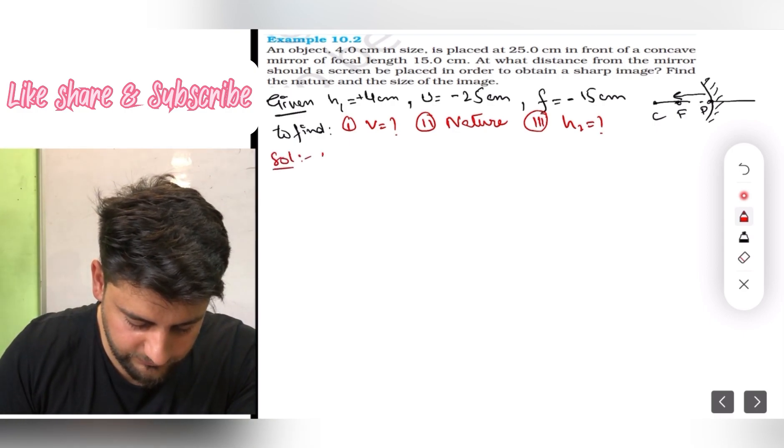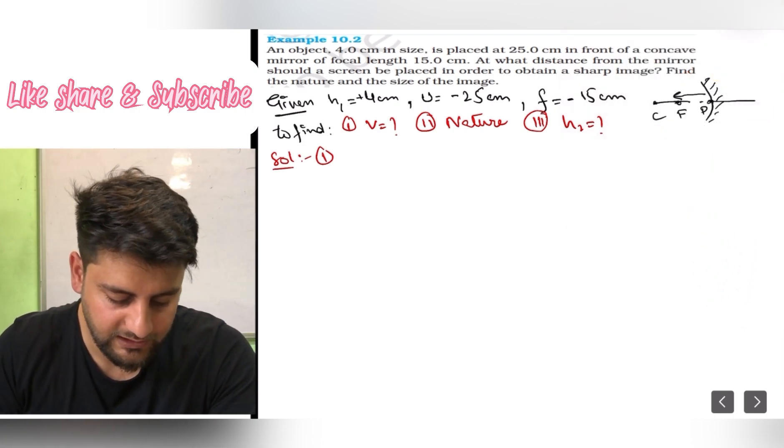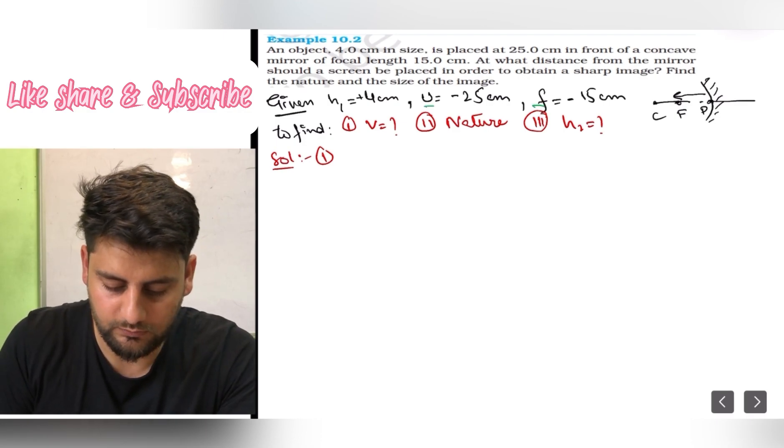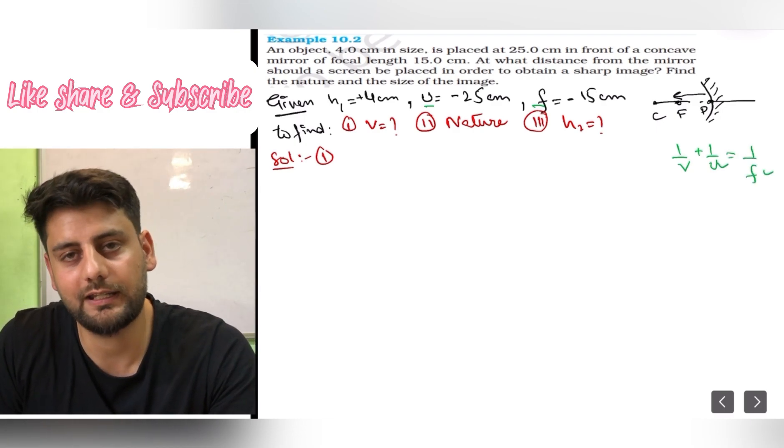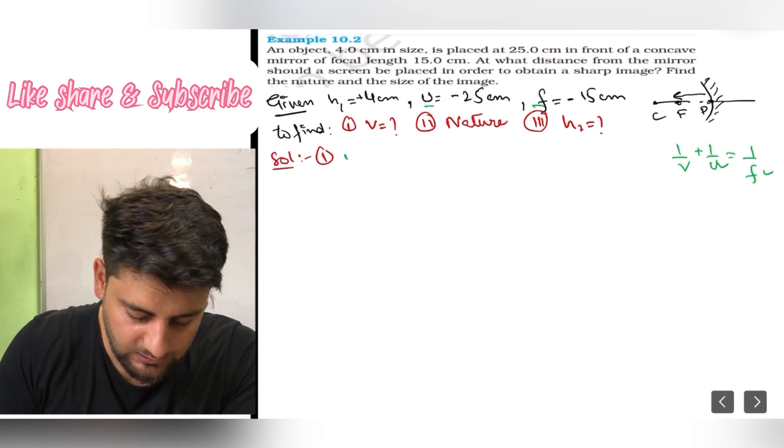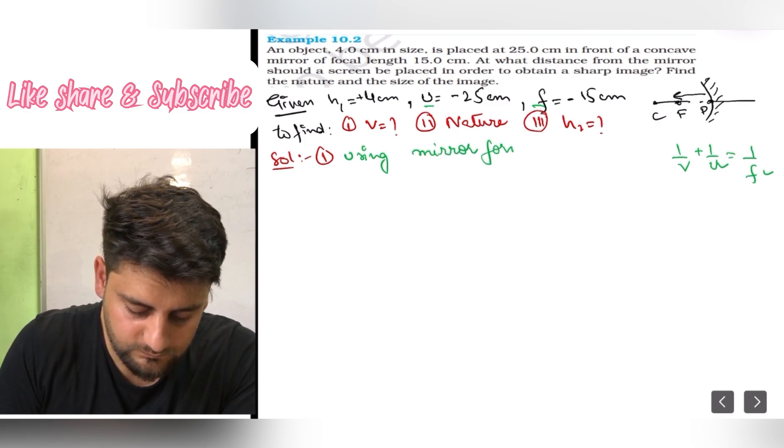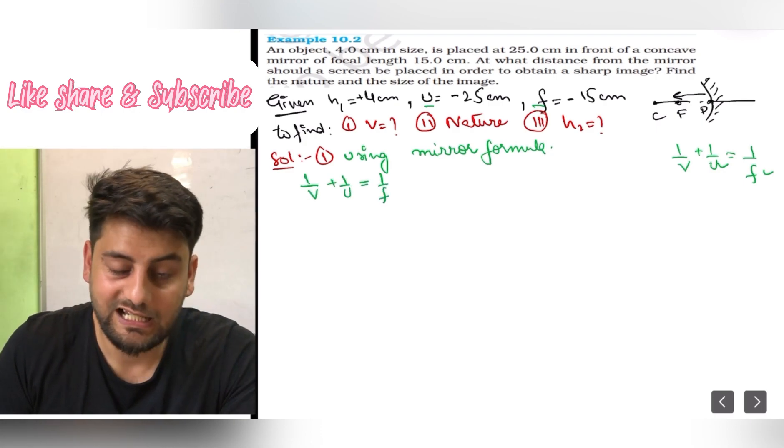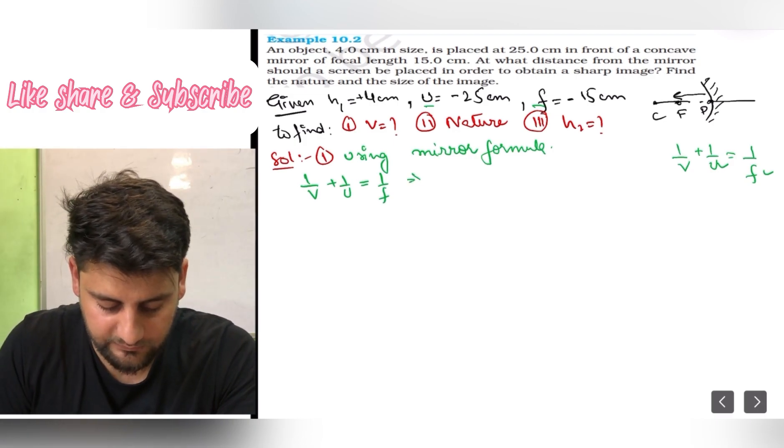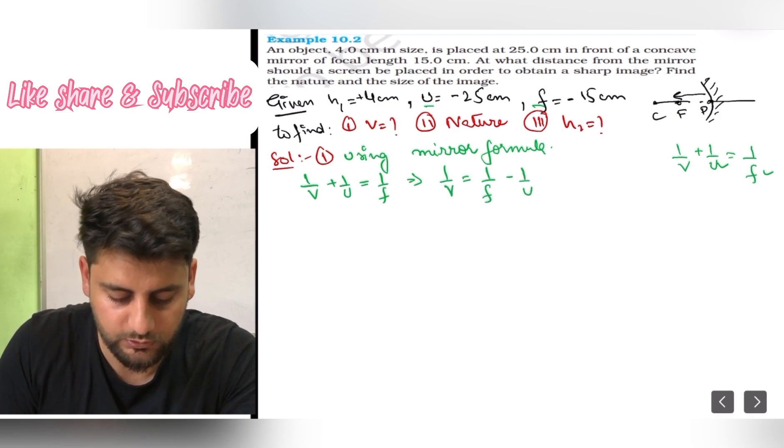Let us do it quickly. Solution. First thing he is asking, let's find v. Again, we have u given, f is given. So 1 upon v plus 1 upon u equals 1 upon f. u and f are given, only v we have to find. One equation with only one unknown. Let's use this equation. Using mirror formula, 1 upon v plus 1 upon u equals 1 upon f. I will not put values in equation yet. First I will shuffle the equation. So 1 upon v equals 1 upon f minus 1 upon u.